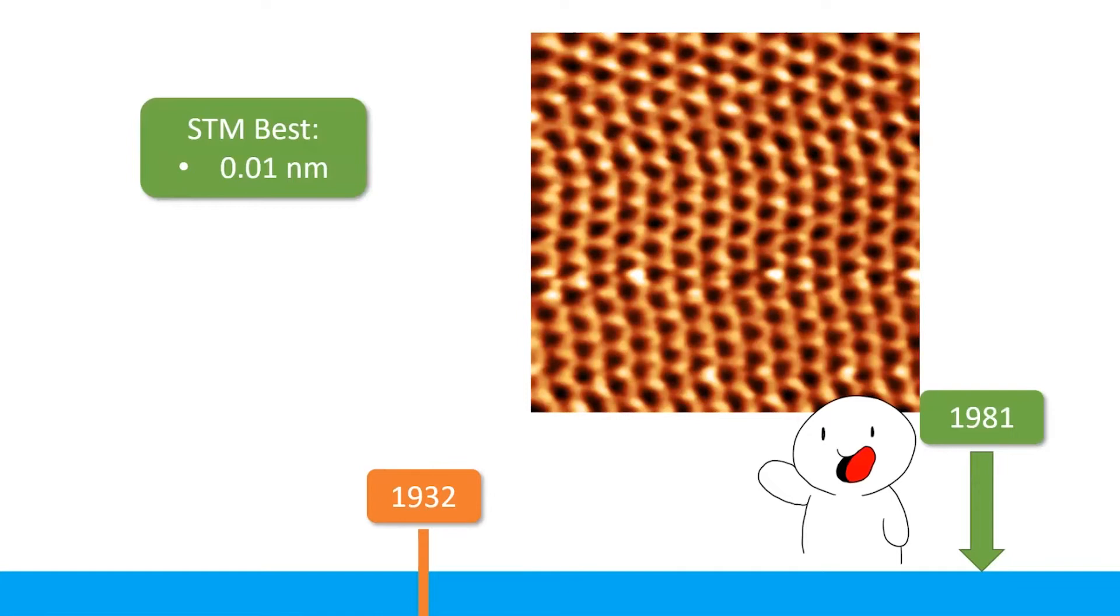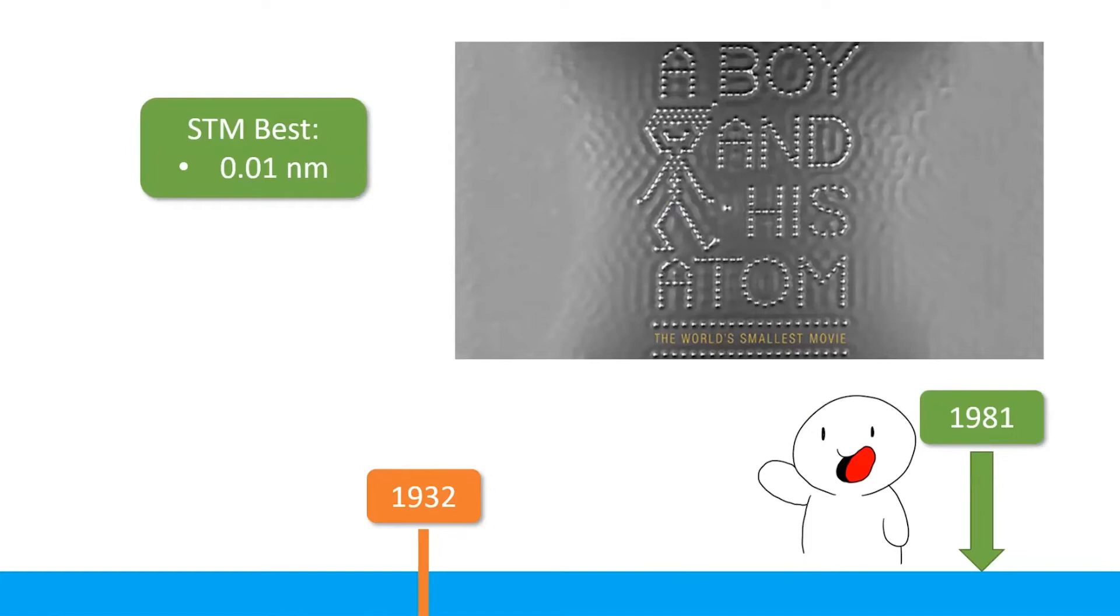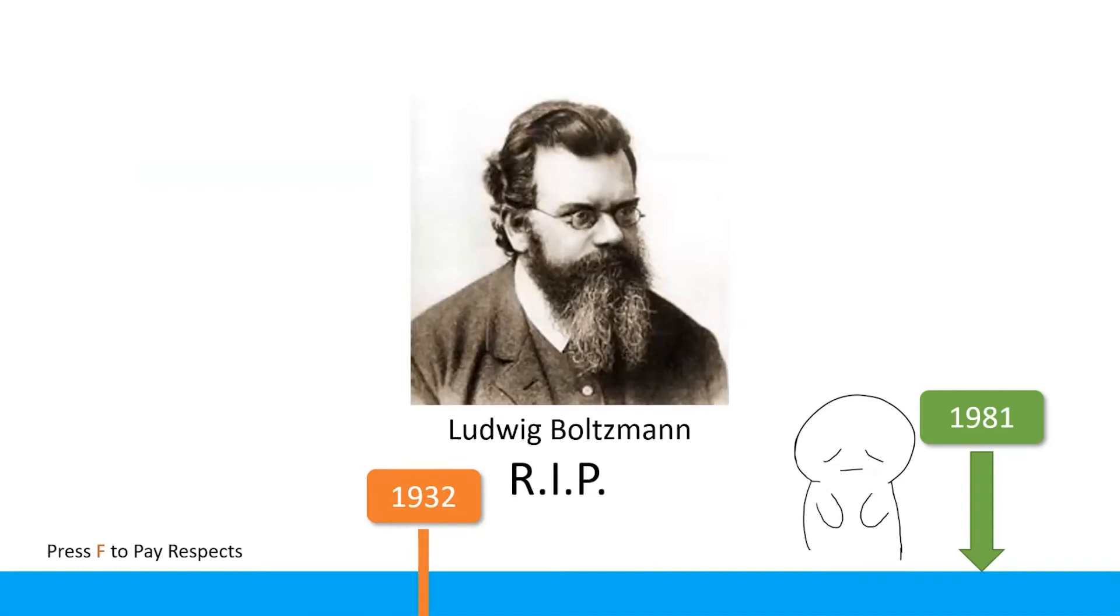Of course, this has a lot of applications in material science, but personally, I think it is cooler that people actually use it to make the world's smallest movie, which is called A Boy and His Atom, which you can check out afterwards. With that, we can finally observe individual atoms and no one can ever doubt that atoms exist anymore. I guess I just wanted to say, rest in peace, Boltzmann. You have been avenged.